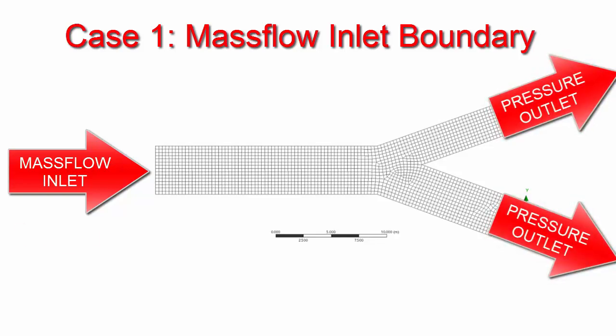The mass flow rate is given as 1 kg per second at the inlet. At the outlet, the pressure is given as 0 gauge pressure.